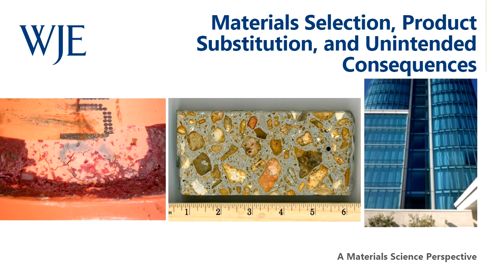Hello everyone, and welcome to today's WJE webinar: Material Selection, Substitution, and Unintended Consequences. My name is Liz Pimper, and I'll be your moderator. During the next hour, material scientists Jeff Plummeridge and Kimberly Steiner and materials engineer Elizabeth Wagner will examine common issues related to material selection. Three material types will be discussed in detail germane to a range of architectural, structural, and fire protection applications. Reasons for selection or substitution and the unintended consequences of those decisions will be highlighted.